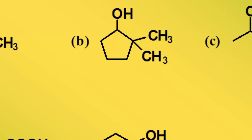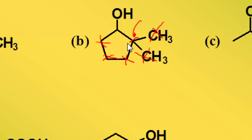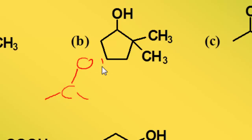Now we'll look at molecule B. Ring structures add another level of complexity because the carbon-carbon bonds do not terminate. This carbon, this carbon, and this carbon can be ruled out as stereocenters, along with this carbon and this carbon. Likewise, this carbon with the two identical CH3 groups can also be ruled out. So that leaves the carbon bonded to the OH group, and we'll take a closer look at that now.